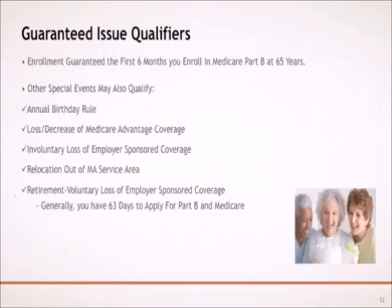Other events may qualify you to purchase a Medicare Supplement Policy with a guaranteed issue. The loss or decrease of your Medicare Advantage coverage due to the Medicare Advantage plan leaving the Medicare program, or you moving out of the plan's service area. There is an involuntary loss of your employer or union-sponsored health care coverage. California has a guaranteed issue program referred to as the Birthday Rule: within 30 days from the date of your birthday, you can switch from one insurance company's Medicare Supplement Policy to another of the same or lesser coverage with guaranteed issue.